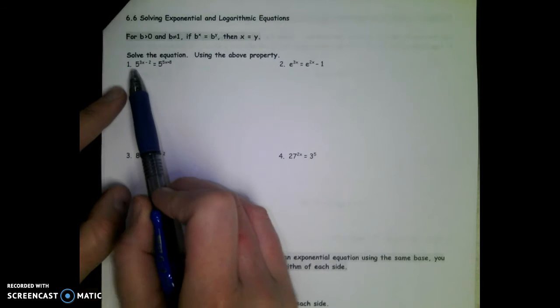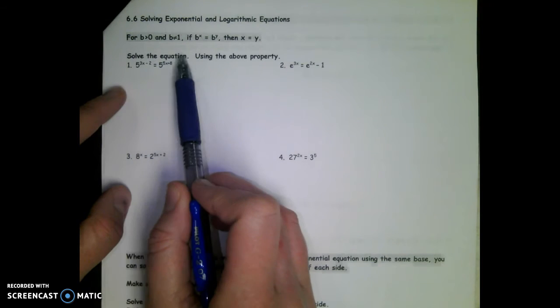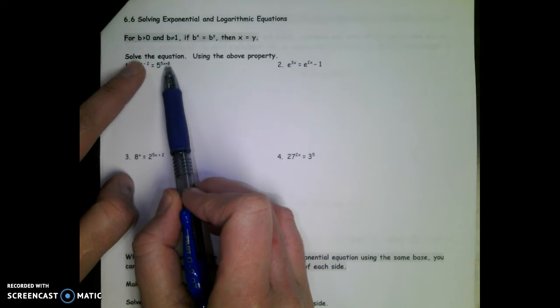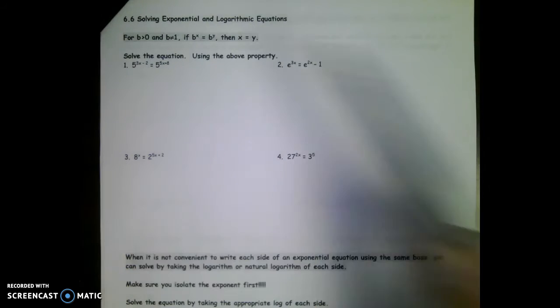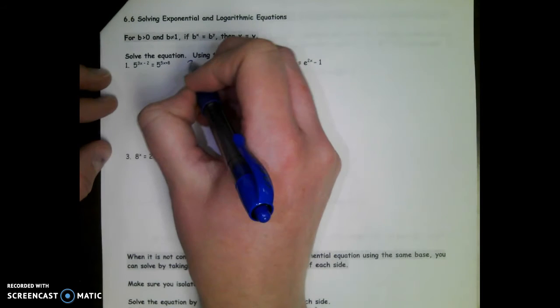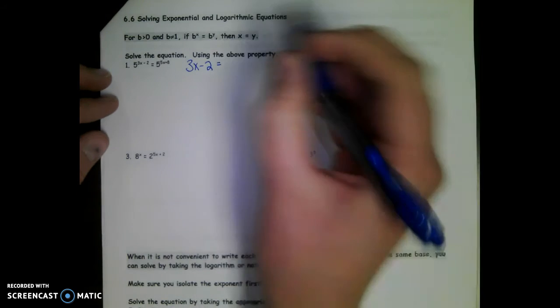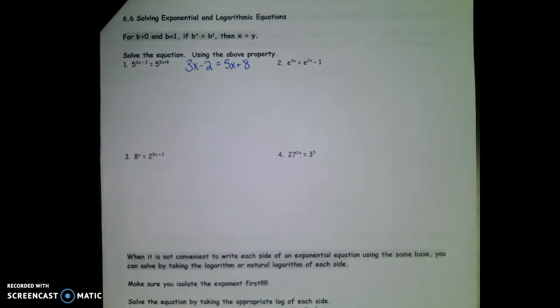So in number one, 5 to the stuff equals 5 to the other stuff. Since it's both 5 raised to something, what do you know about stuff and other stuff? They must be the same. So 3x minus 2, that would be stuff, is going to equal 5x plus 8, formerly known as other stuff.